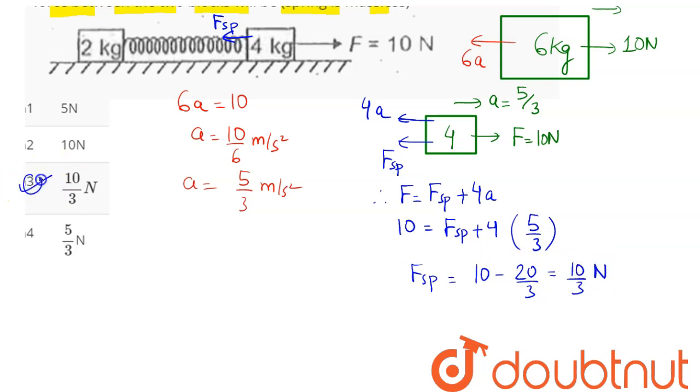10 by 3 N means option number 3 is the correct answer, so 3 is our answer.